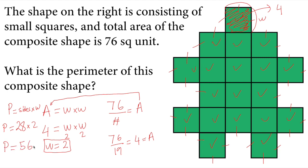So the answer is 56 units. This is the answer to this question. The perimeter of this composite shape is 56 units.